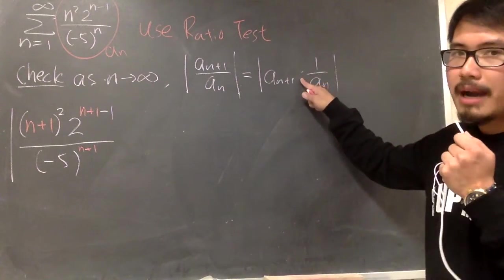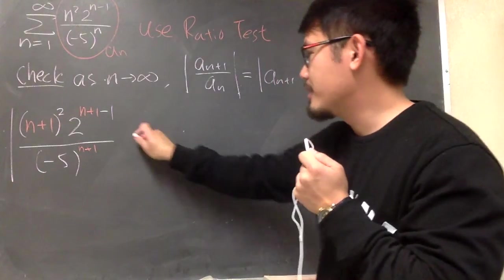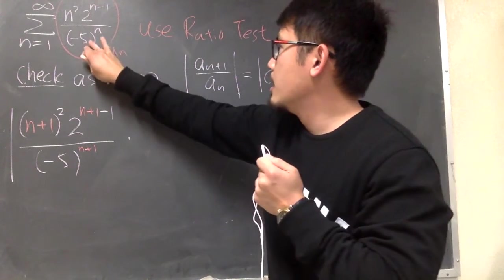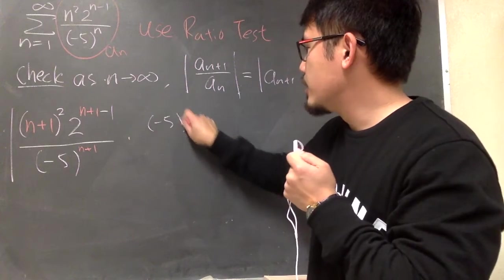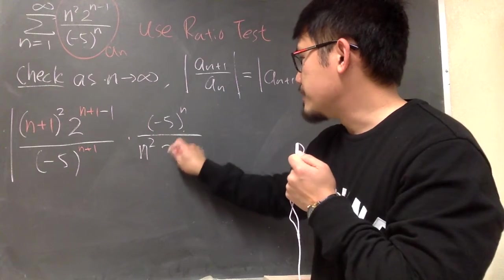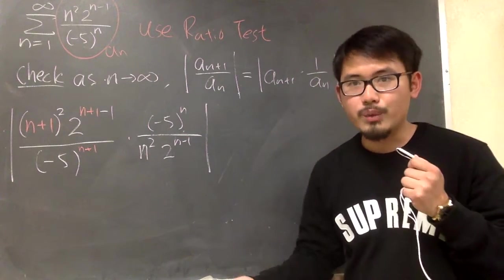And then we multiply by the reciprocal of the original. So we'll take this, flip it, put it here. So we multiply by, this will be on the top now. Negative 5 in the parentheses to the nth power over this, which is n squared, times 2 to the n minus 1 power. And now what can we do next?